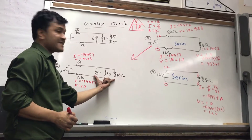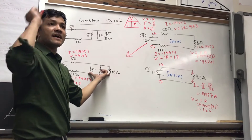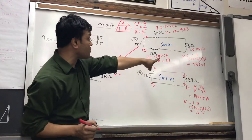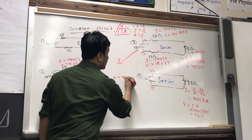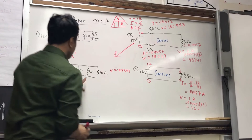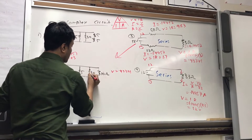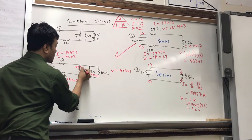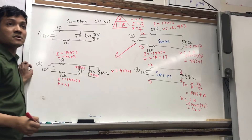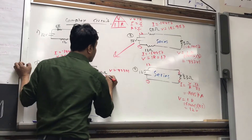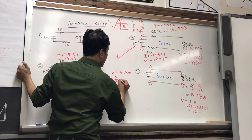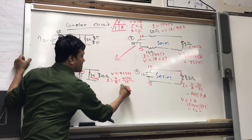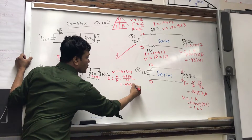Now we're going to do this. What is it? Parallel. So the current is the same or voltage is the same? Voltage is the same. So we're going to write voltage. What is the voltage over there? 0.43341. So what should be the voltage right here? 0.43341. What is the voltage right here? 0.43341. So now how can we find the current? The current is again V over R. So V is 0.43341 and R is 10. That gives us 0.043341.